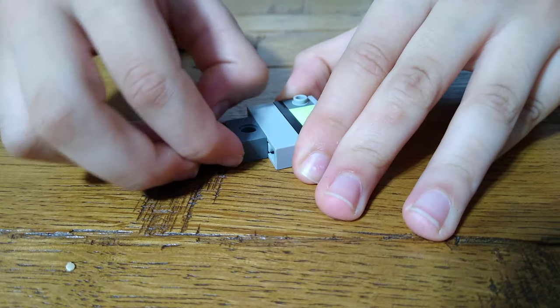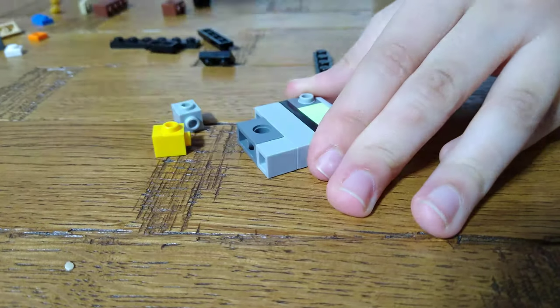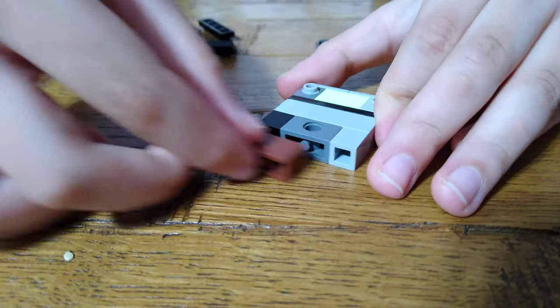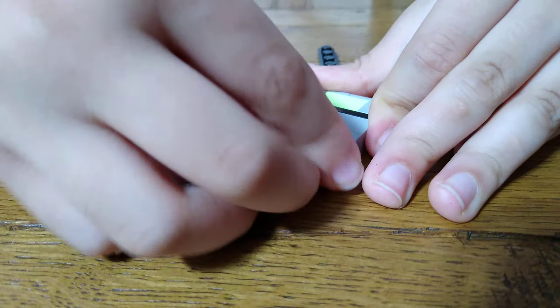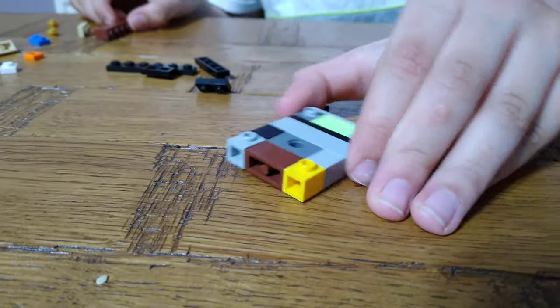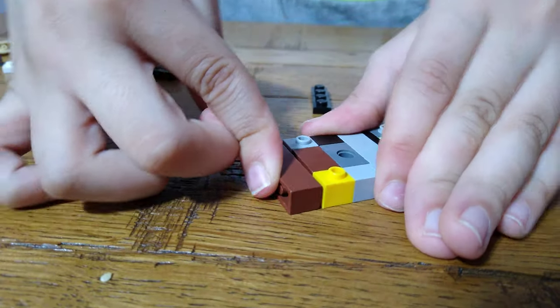First you get these two bricks with no holes, then you get some brick, then put them on like that, and then you get a brick again.